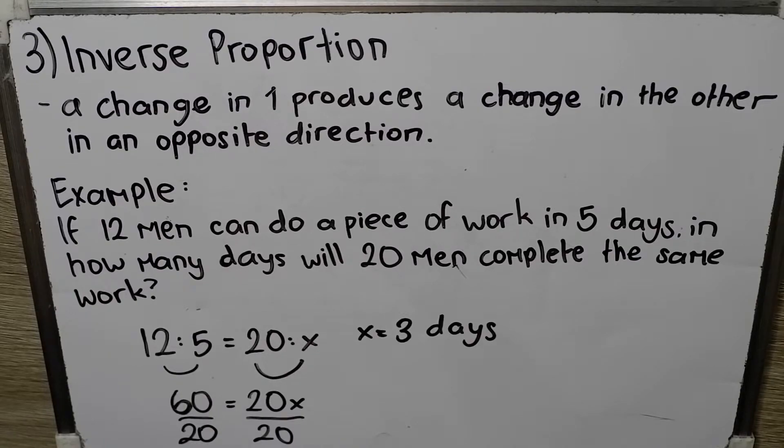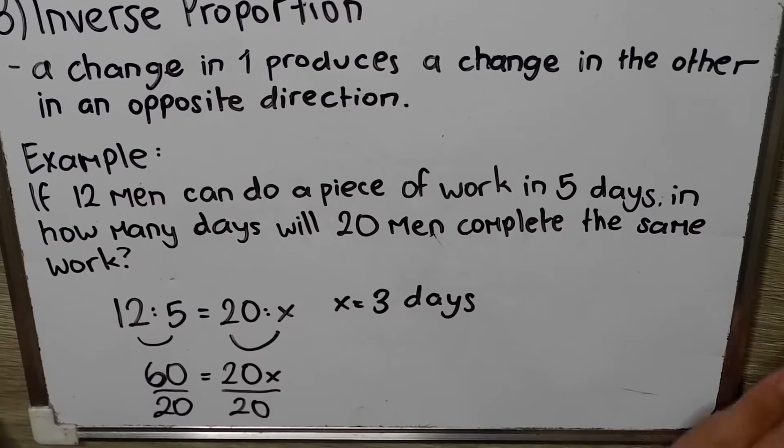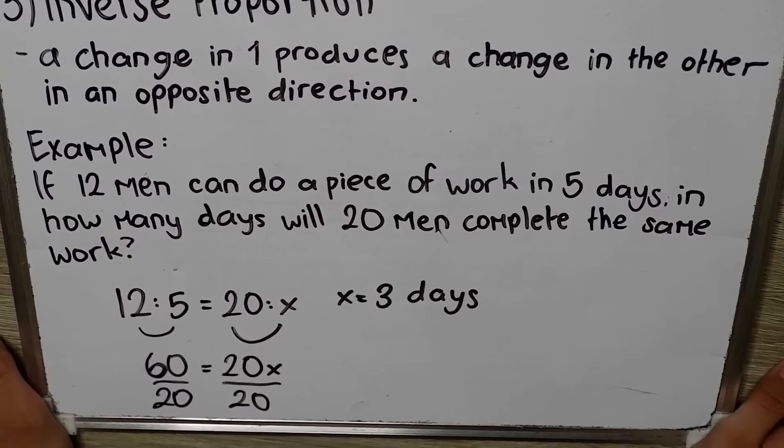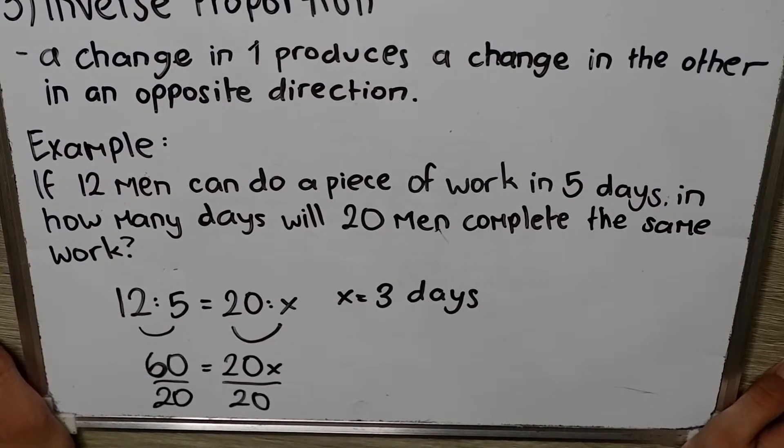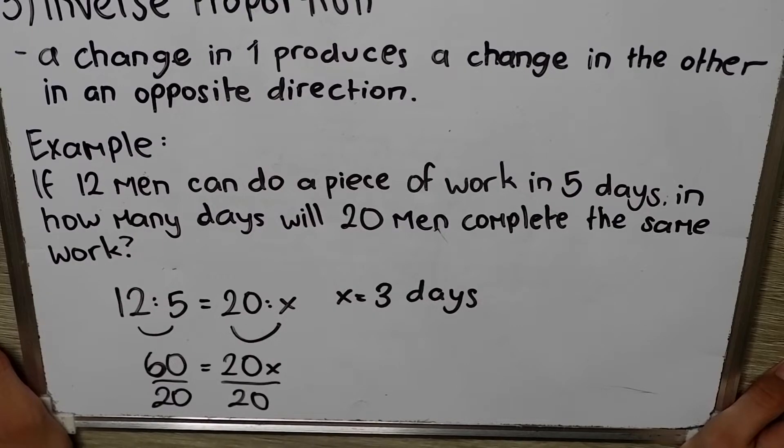Number 3 is inverse proportion. It is a change in one produces a change in the other in an opposite direction. This just means that when a ratio increases, the other ratio decreases. And vice versa. An example will be, if 12 men can do a piece of work in 5 days, in how many days will 20 men complete the same work?